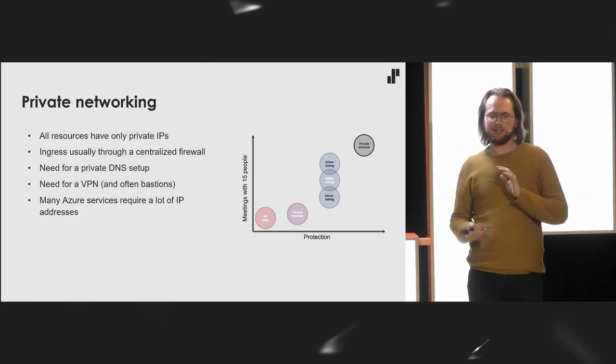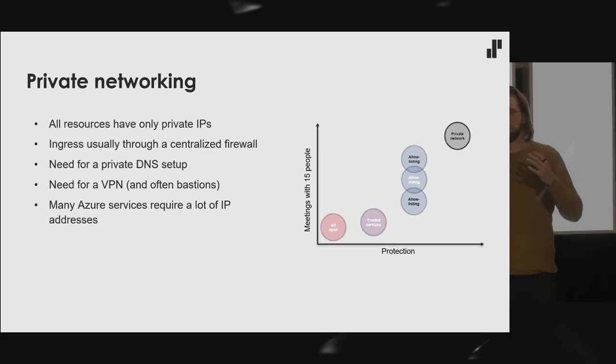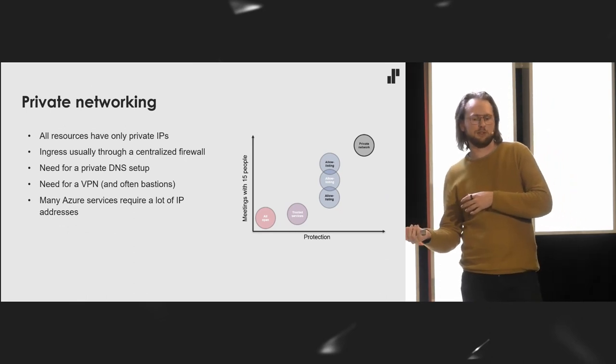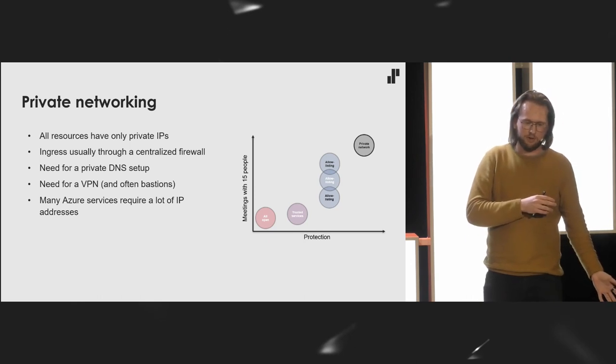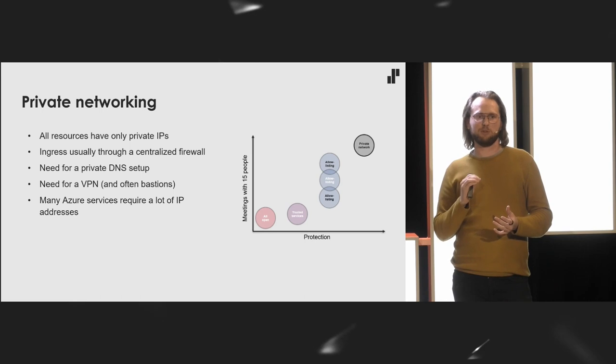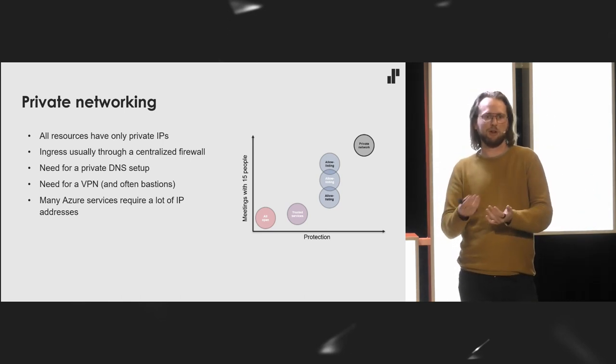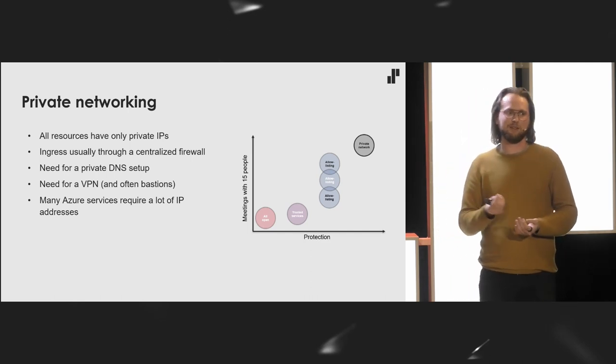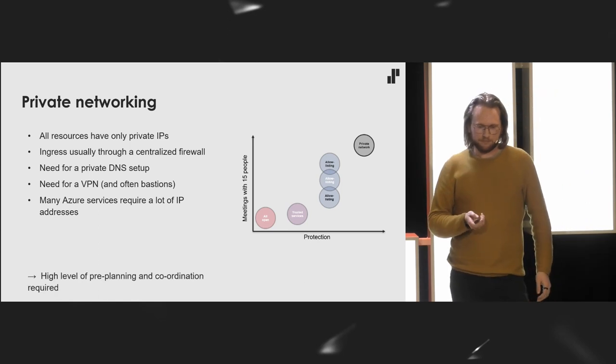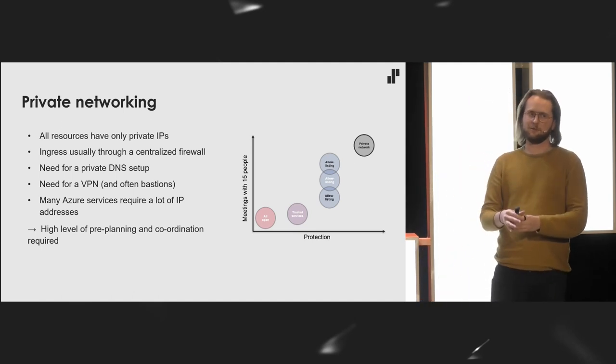And especially if you have a smaller project, this might end up being kind of the biggest part of the project. So kind of traditional how you would do it also in on-prem. Only private IPs on your resources. Incoming traffic goes through a centralized firewall. You need some private DNS. You need some VPNs to get access for the developers. Usually some bastion servers. Also some Azure services require an insane amount of private IPs. Container apps: over 500 IPs per environment, even you would be running one container. 500 private IPs. Well, good if you have those. But some organizations are kind of running out of private IP spaces because they have so much stuff. You need a lot of pre-planning and coordination between organizations.